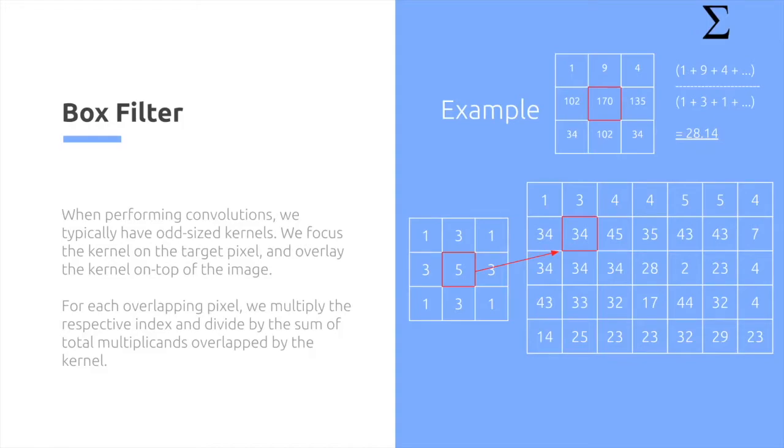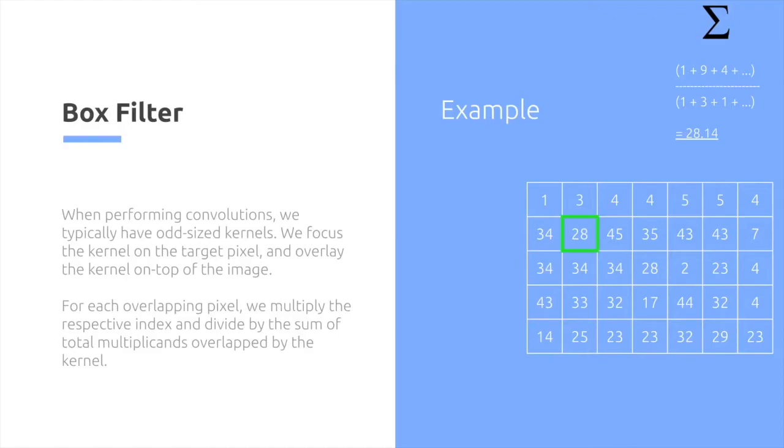As the denominator, we add up all the numbers inside the kernel. And here, we get the value of 28.14. The value inside here then becomes 28.